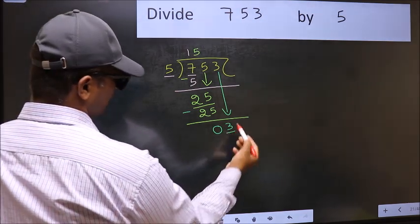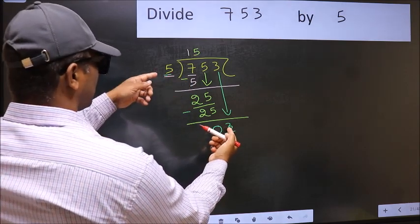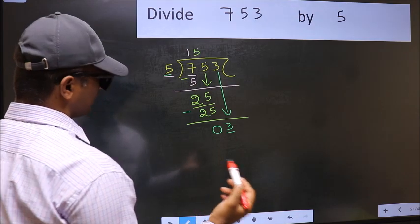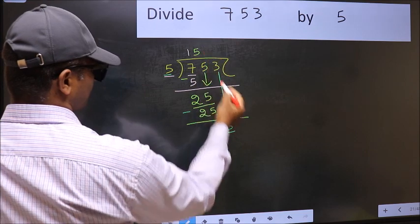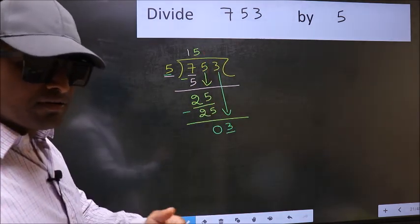Here we have 3 and here 5. 3 is smaller than 5. So what many do is they directly put dot and take 0, which is wrong.